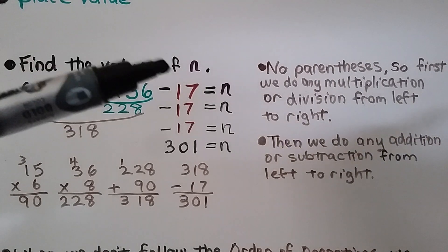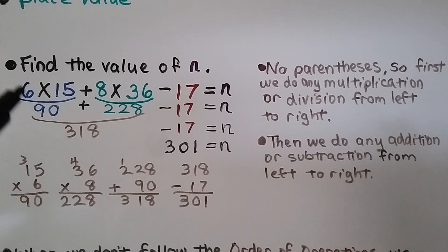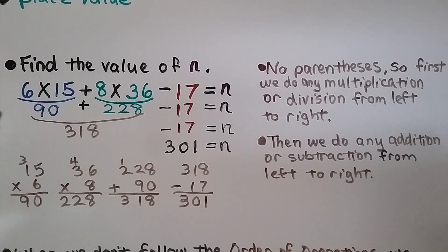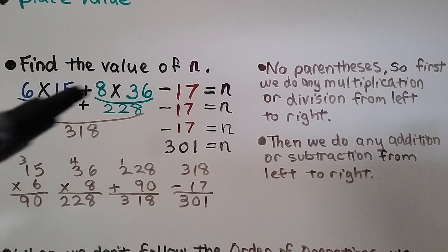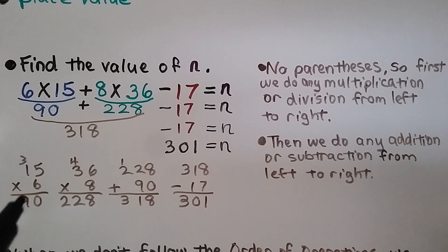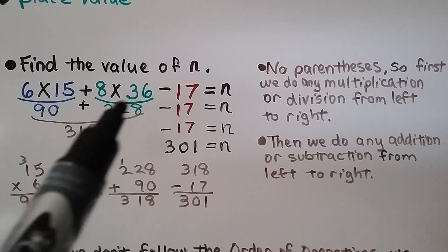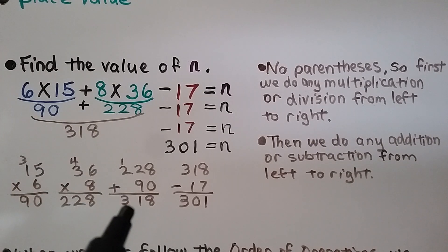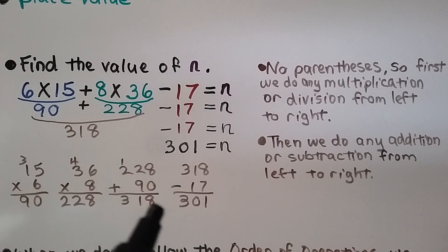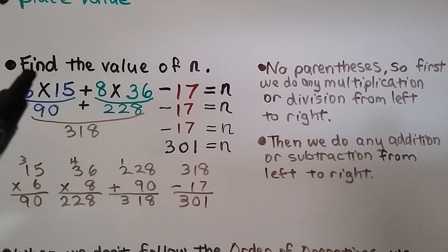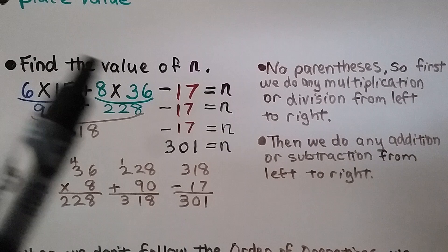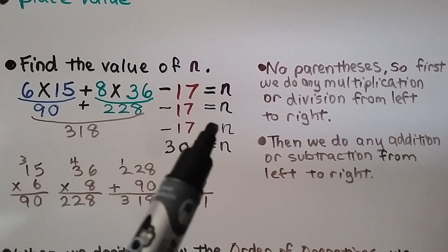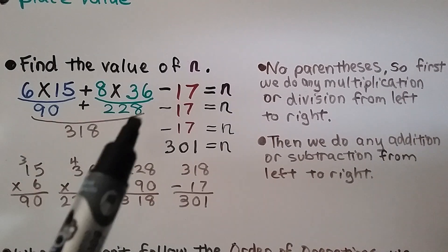We need to find n in: 6 times 15 plus 8 times 36 minus 17. There are no parentheses, so we do multiplication or division from left to right first. 6 times 15 equals 90, then 8 times 36 equals 288. We add 90 plus 288 to get 378, then subtract 17. Wait — 8 times 36 is 288, so 90 plus 288 equals 378, and 378 minus 17 equals 361. Then we add and subtract from left to right.